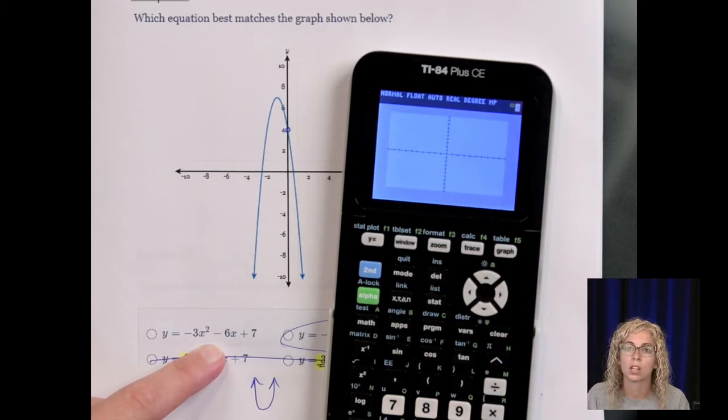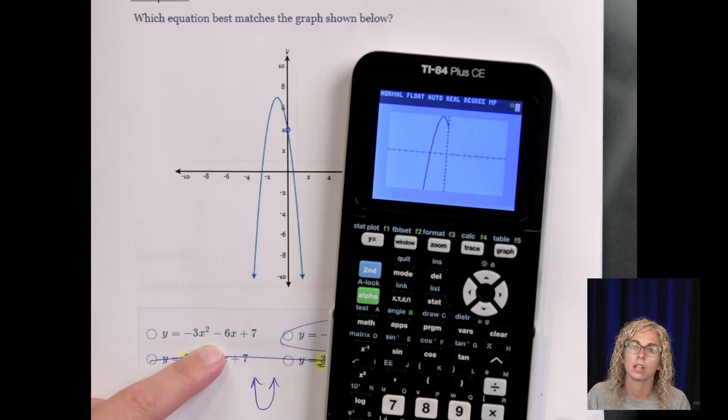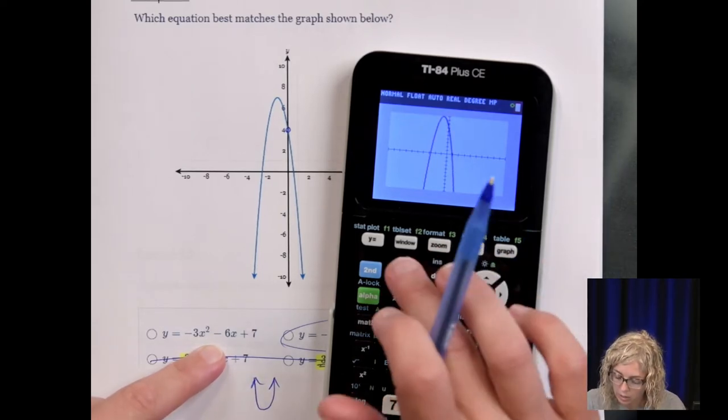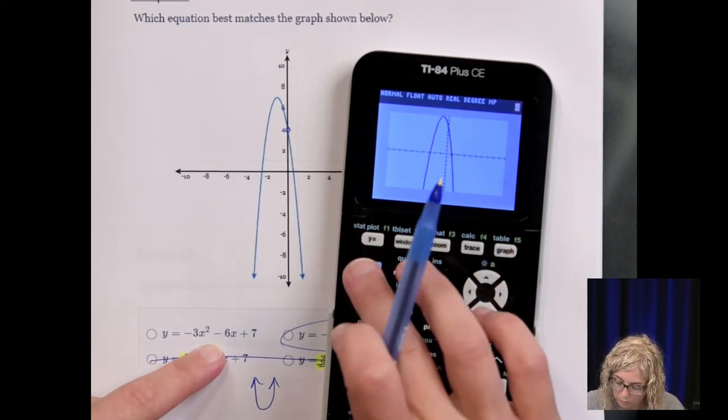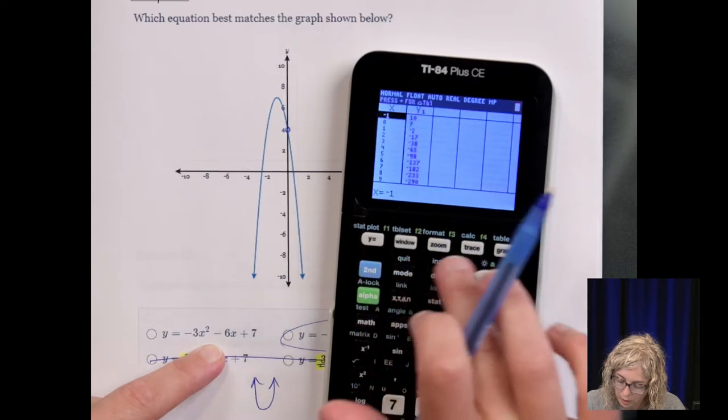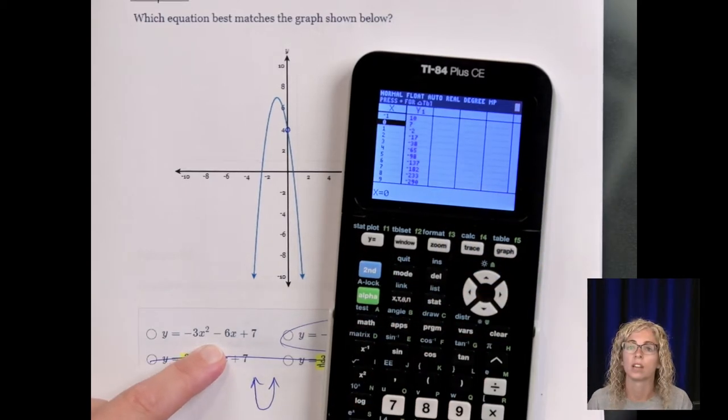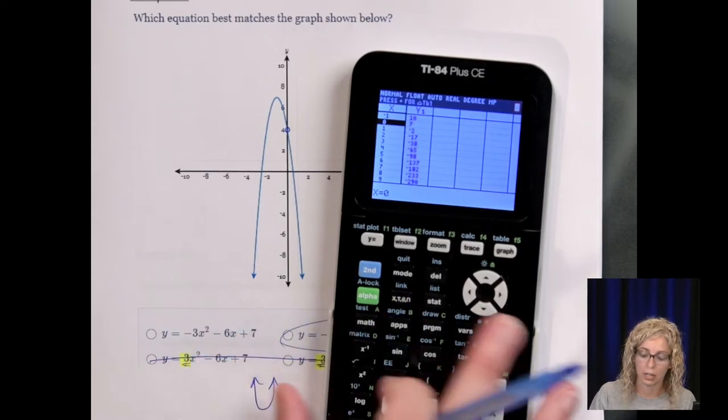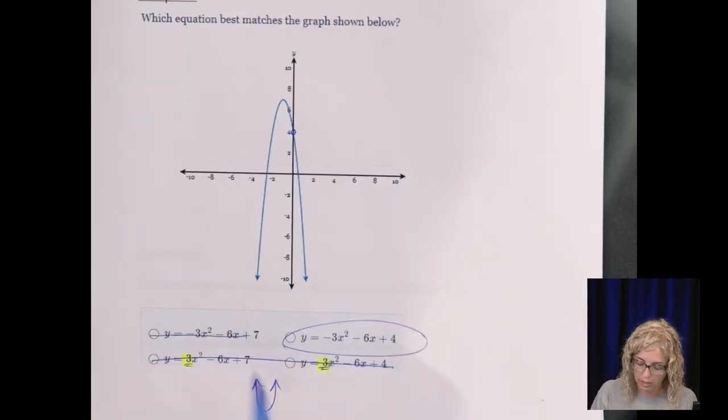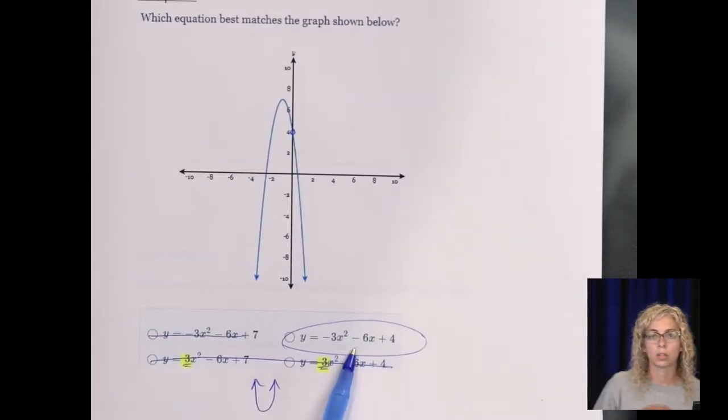And then I can see here, okay, it doesn't look like mine. Zoom is standard. It might look better. Number 6 is that it's a 10 by 10 screen. We could see even from a table that it crosses at 0, 7. Okay? And that would be our y-intercept. So the correct answer here would be this one.